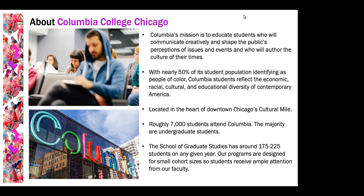We're located right in the heart of downtown Chicago in the Cultural Mile, specifically in a neighborhood called the South Loop. We have roughly 7,000 students who attend Columbia, the majority of which are undergraduate students. The School of Graduate Studies has around 175 to 225 graduate students in any given year, so our graduate programs are designed for small cohort sizes, and students really receive that personalized attention from our faculty members.